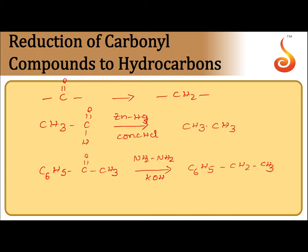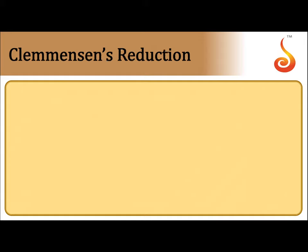In Clemmensen's reduction and Wolff-Kishner reduction, the C=O group of the carbonyl compound is converted to CH₂ and we get the corresponding hydrocarbon. One more point: Clemmensen's reduction is widely used for reduction of aldehydes or ketones which are sensitive to alkali.